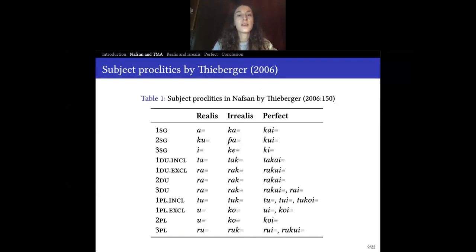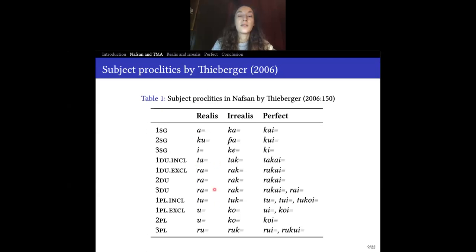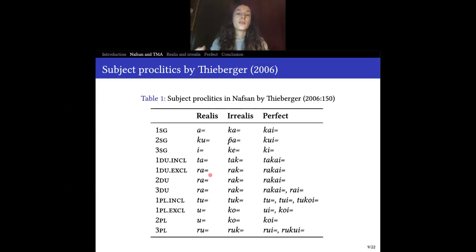Let us look at the paradigms that Nick Thieberger identified for Nafsan for these subject proclitics, which are our main topic here. Basically, we have different persons and numbers that are denoted, but crucially we have these different modal and aspectual categories such as realis, irrealis, and perfect. Each of these paradigms is really independent — there is no direct compositionality morphologically; each paradigm is really independent morphologically or syntactically, as you will. So they are clearly independent from each other.